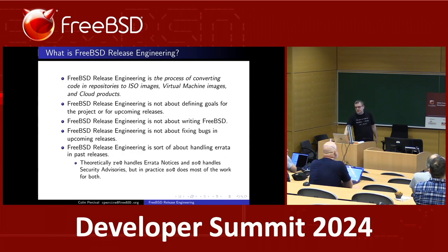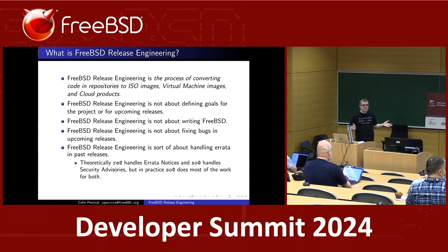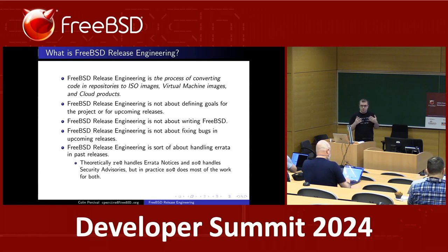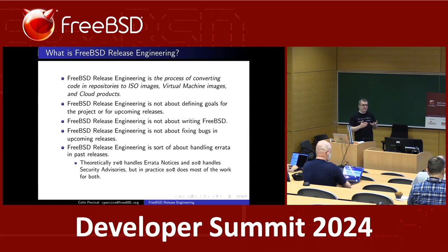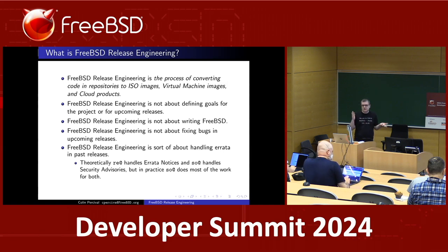What is FreeBSD release engineering? As I see it, it is basically the process of taking all of the stuff that you all do in the FreeBSD gate repositories and turning it into the stuff that users actually use — the ISO images, the VM images, and all the stuff in the various clouds: EC2, Google, Azure, Vagrant. We support Vagrant; I don't know if anybody uses it, but we're still building it.